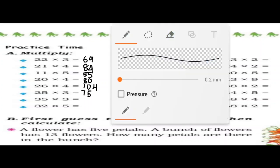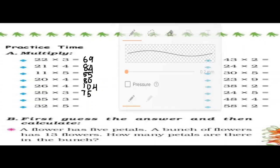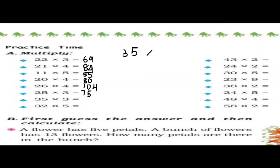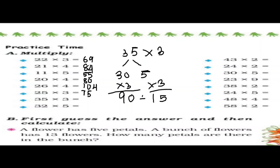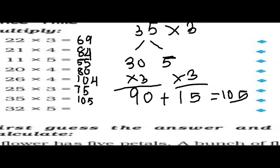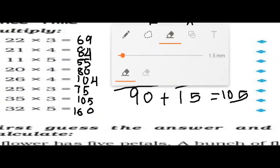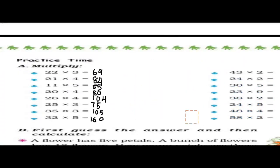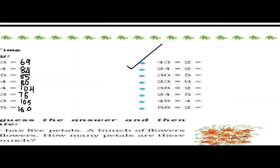Let us do 35 into 3. Divide 35 into 30 plus 5, each multiplied by 3. 30 times 3 is 90, 5 times 3 is 15. When you add them, your answer will be 105. In the same manner, if you do 32 into 5 you will get 160. I have done this column for you — you will do the remaining column as your home assignment.